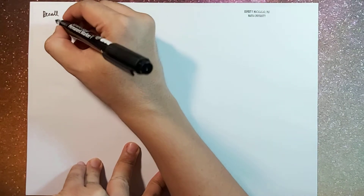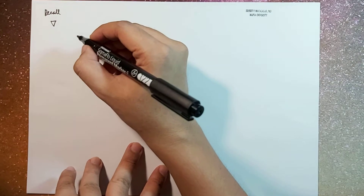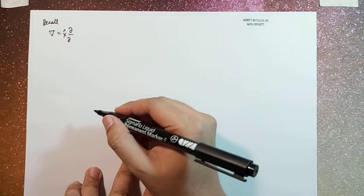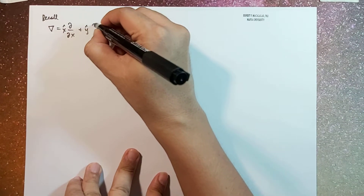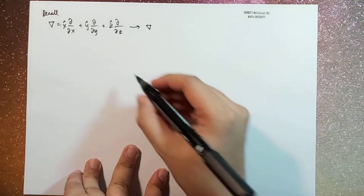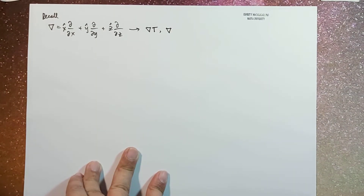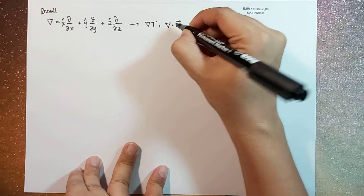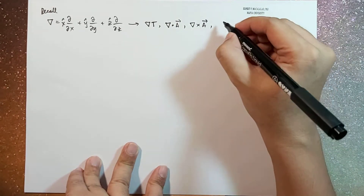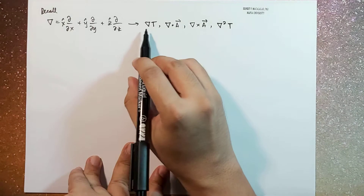Recall that the vector derivatives in the Cartesian coordinate system are rooted from the expression of your vector differential operator del. This is equal to x-hat times the partial derivative with respect to x, plus y-hat times the partial derivative with respect to y, plus z-hat times the partial derivative with respect to z. From here we can apply it to a scalar field T, take the dot product with some vector A, take the cross product, or take the Laplacian of your scalar potential. This is what we call the gradient.